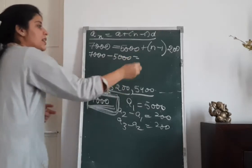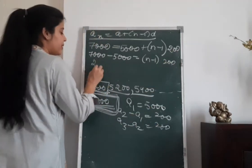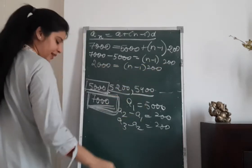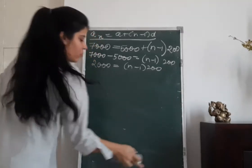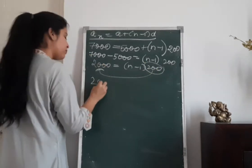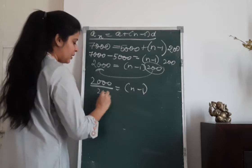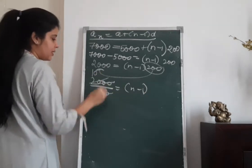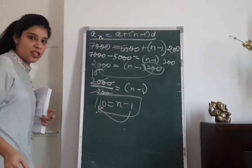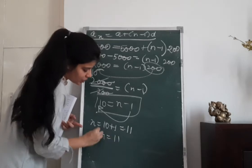Solving: 7,000 − 5,000 = (n−1) × 200, which gives 2,000 = (n−1) × 200. Dividing both sides, 10 = n−1. Taking the −1 to the other side, n = 10 + 1 = 11. So n is equal to 11.